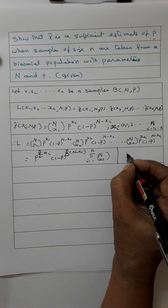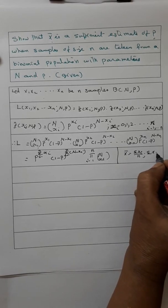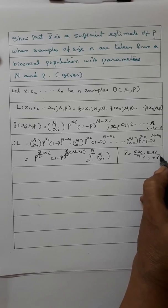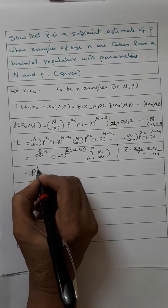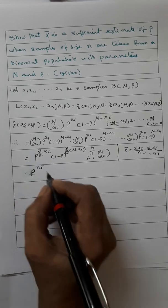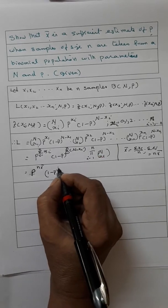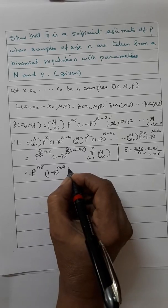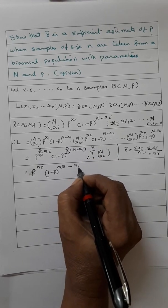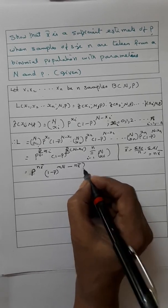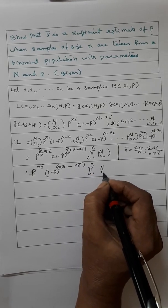We know that x-bar = Σxi / n, so we can rewrite Σxi = n·x-bar. This gives p^(n·x-bar) · (1-p)^(n·n - n·x-bar), multiplied by the product of C(n, xi) for i = 1 to n.